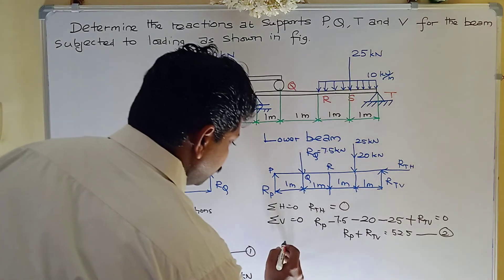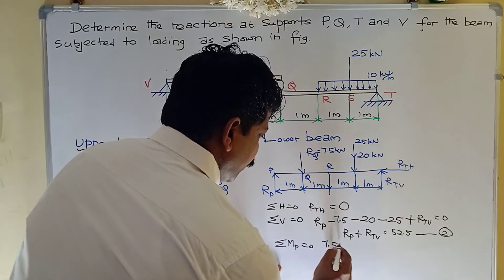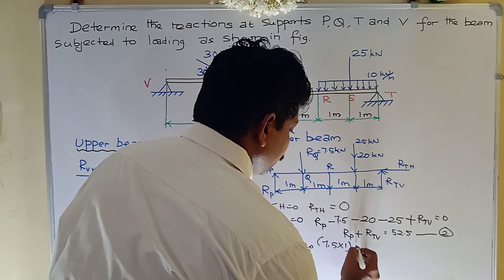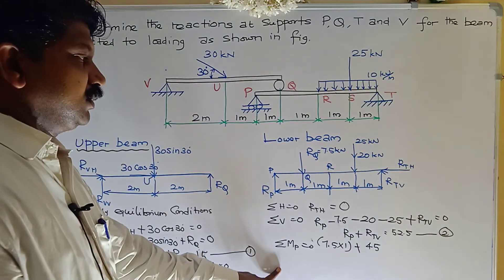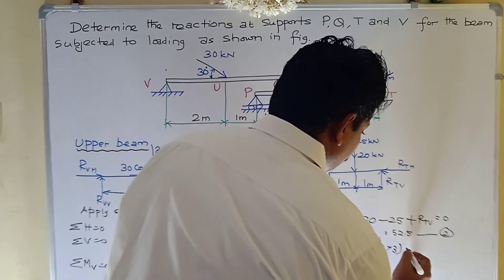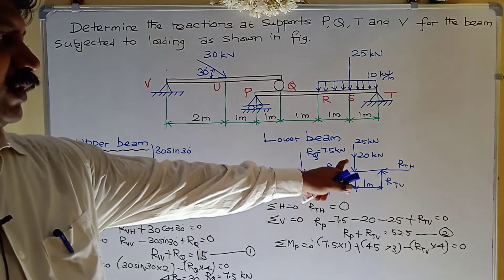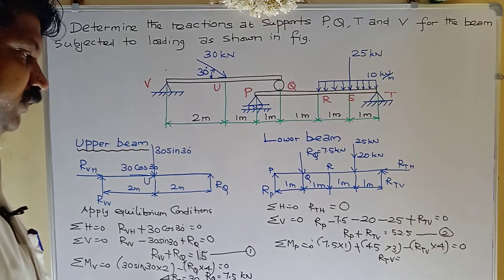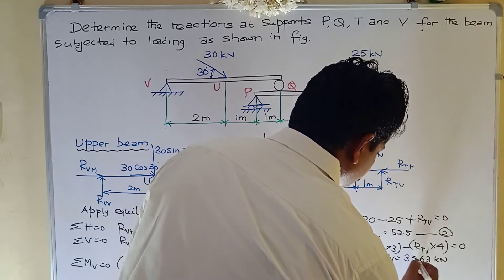Third condition: σMp = 0. Taking moments about point P: 7.5 × 1 (clockwise, positive) plus 45 × 3 (clockwise, positive, where 45 = 20 + 25) minus RTV × 4 (anticlockwise, negative) equals 0. From this: RTV × 4 = 7.5 × 1 + 45 × 3, so RTV = 35.63 kN.